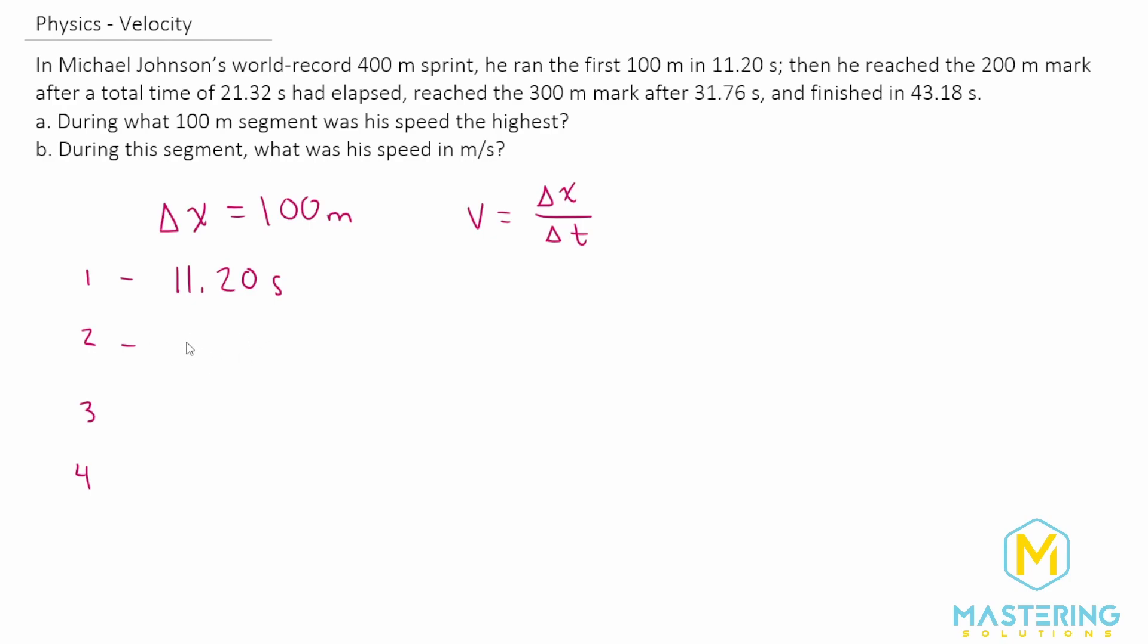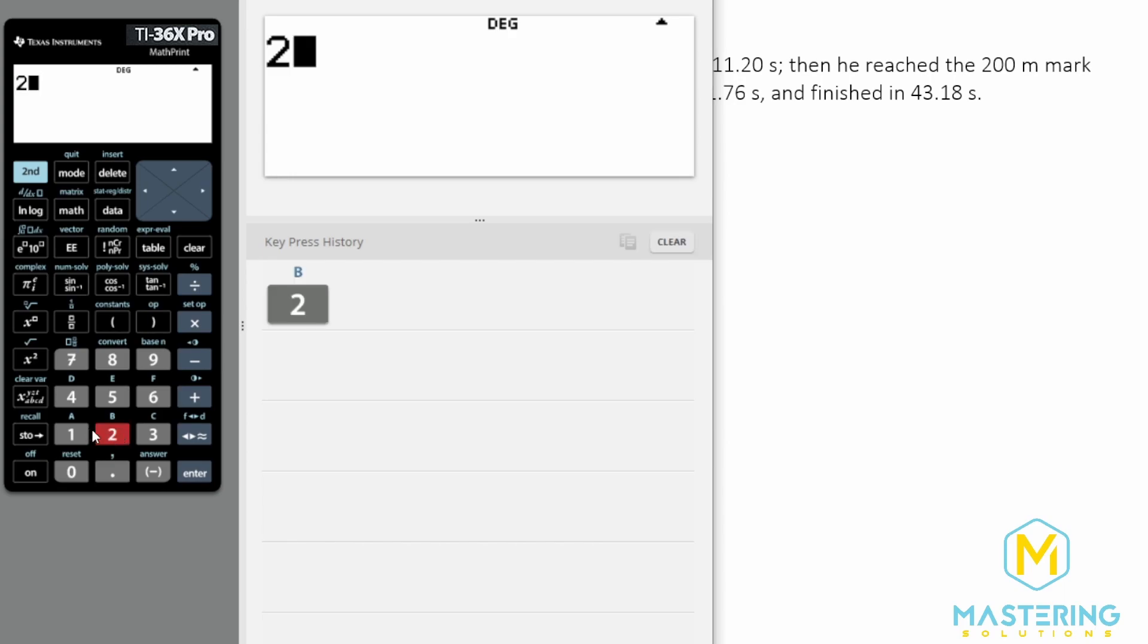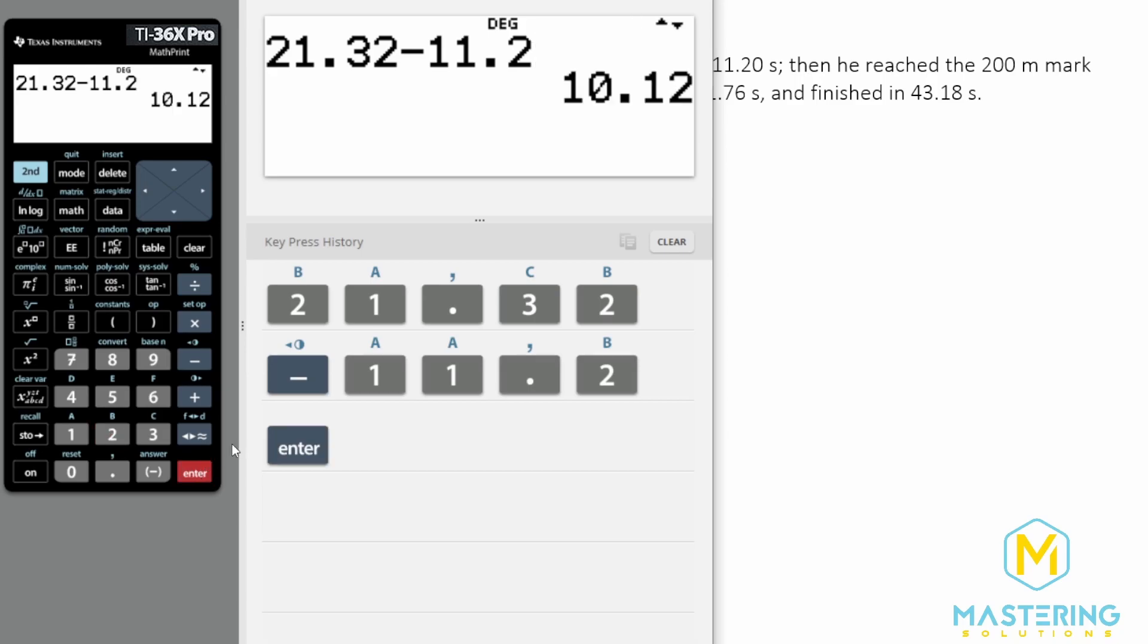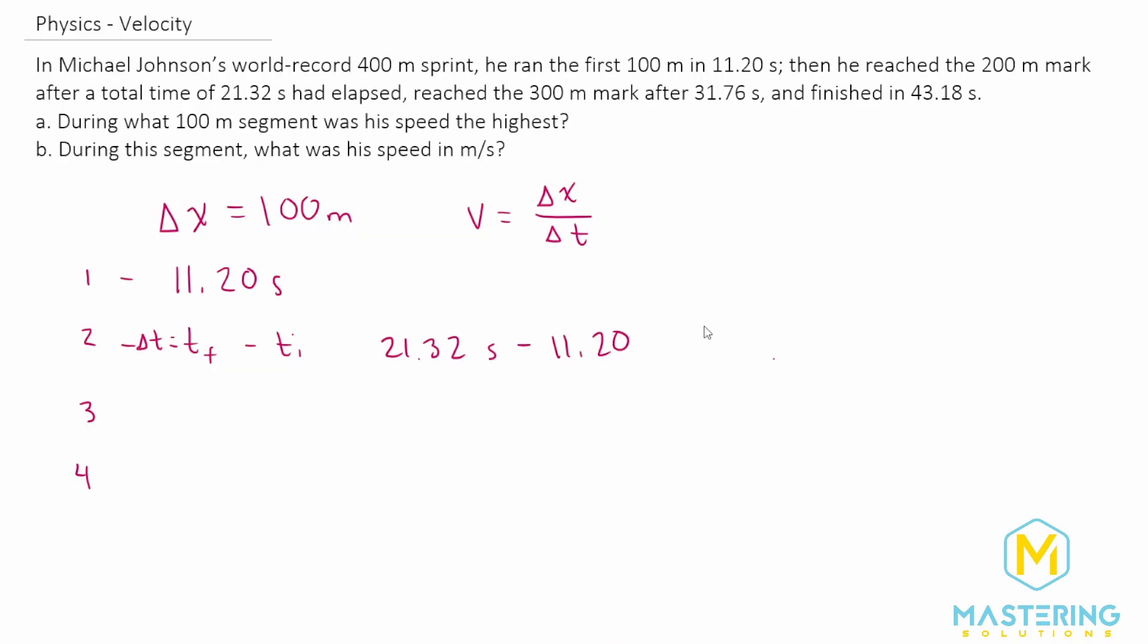So the t final minus t initial for delta t is going to be the 21.32 seconds minus 11.20. So the time for that one is 10.12 seconds.